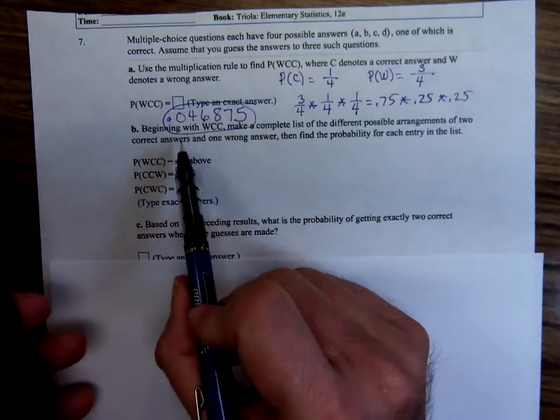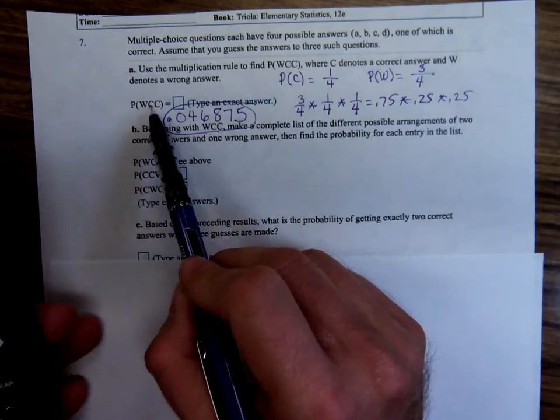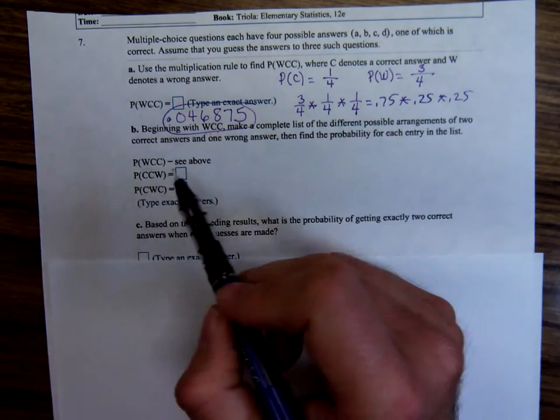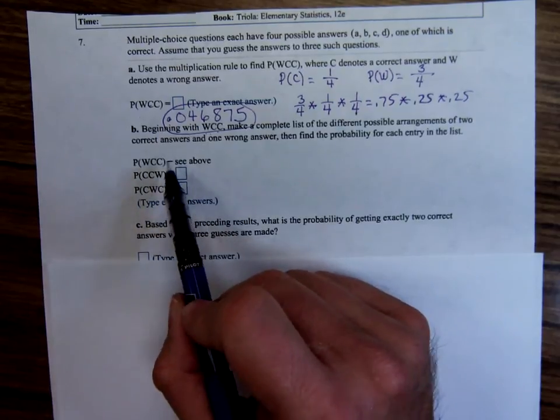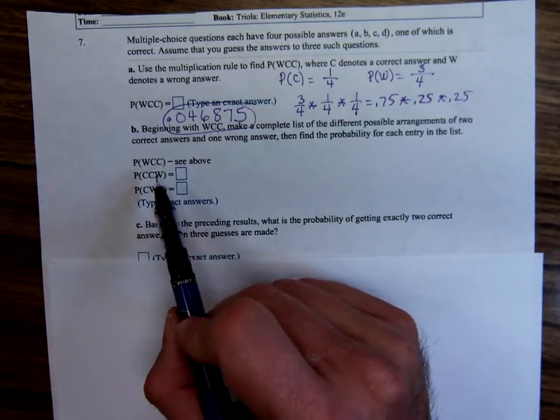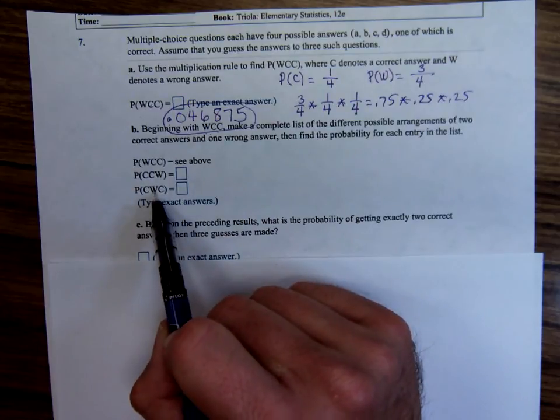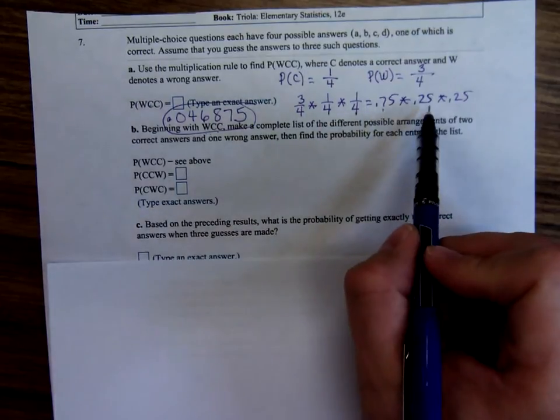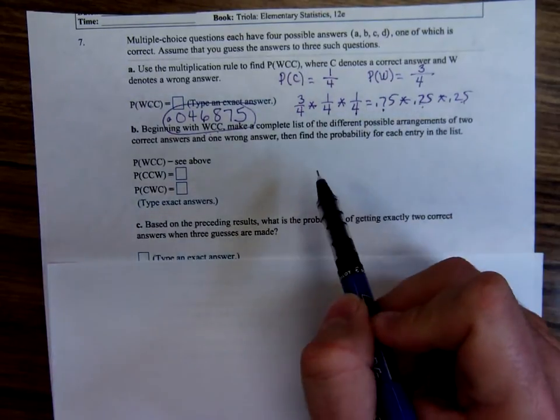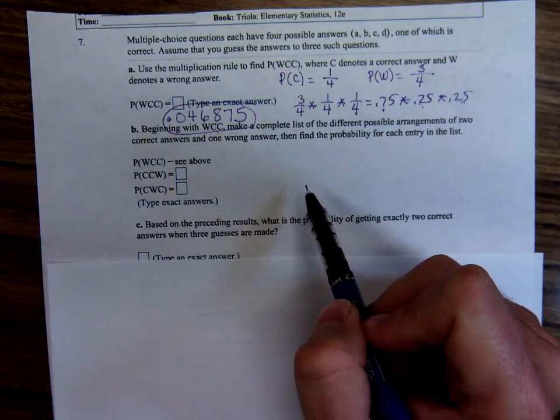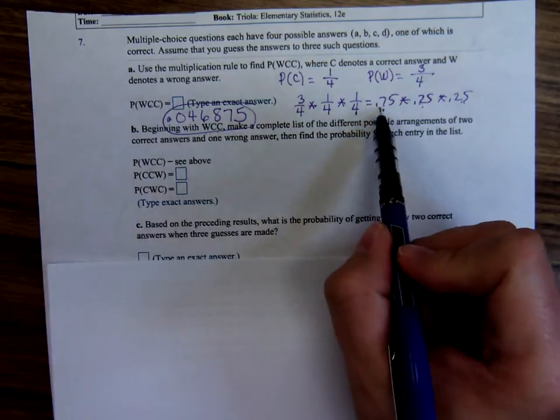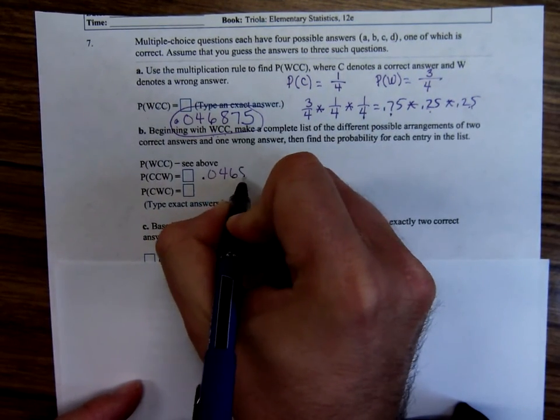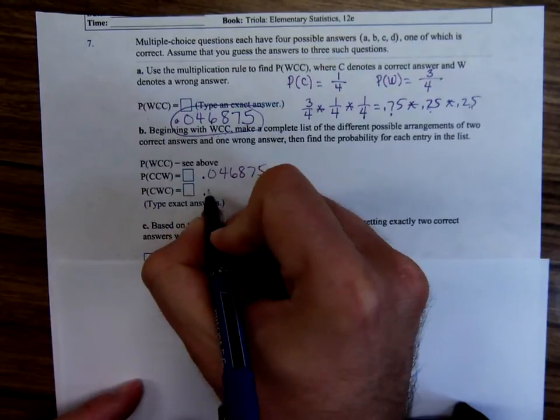Now, beginning with wrong, correct, correct, the one we just did, make a complete list of different possible arrangements of two correct and one wrong. See, the first one you might get wrong, or the last one, or the middle one. But no matter what, you're still multiplying two 0.25s and one 0.75. So no matter what, you're still getting 0.046875 for each of these.